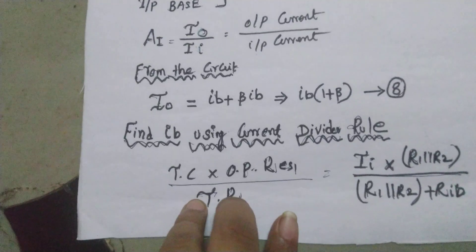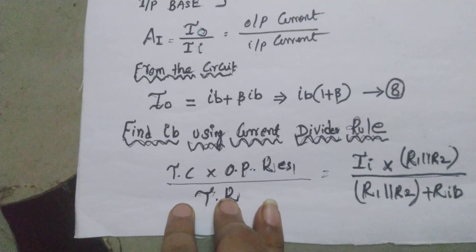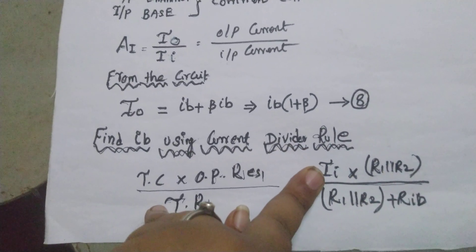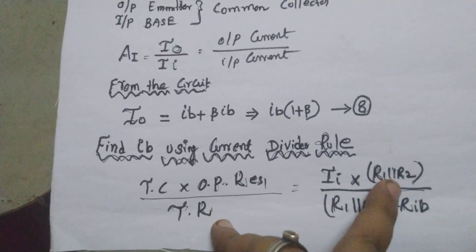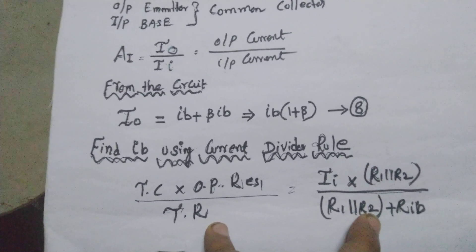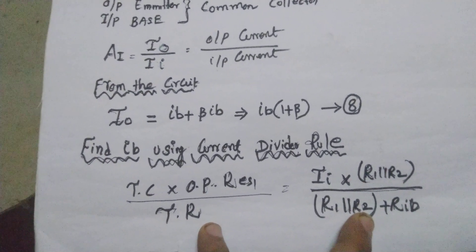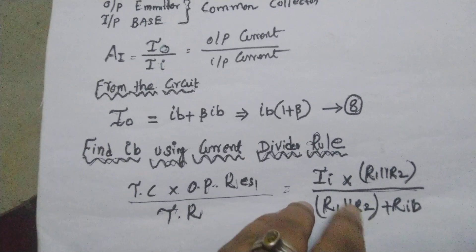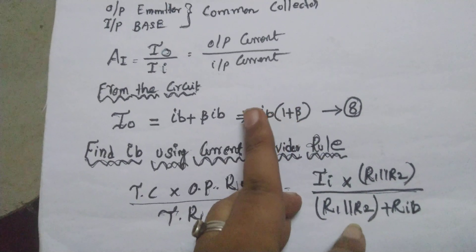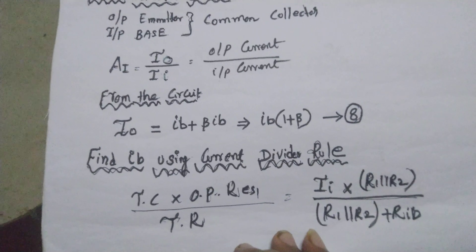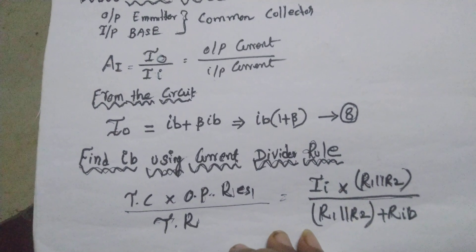IB is found using the current divider rule: IB = total current × opposite resistance / total resistance. Total input current is II, opposite resistance is R1 ∥ R0, and total resistance is determined from the circuit. Substituting this IB value into I0 = IB(1+β) gives the final expression for current gain AI = I0/II.